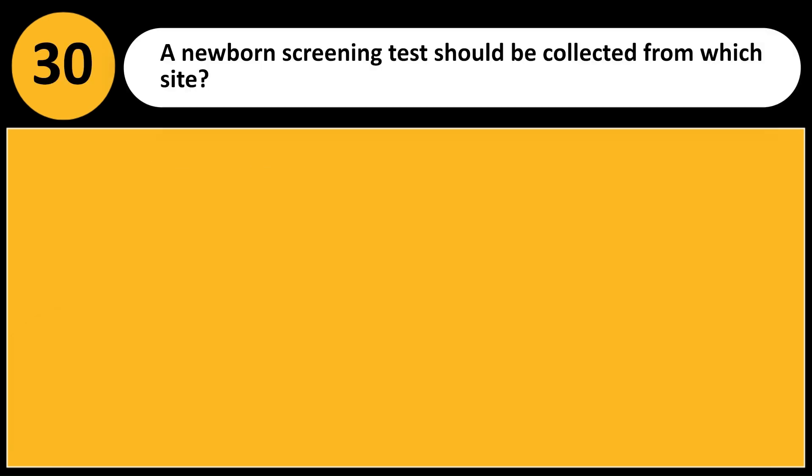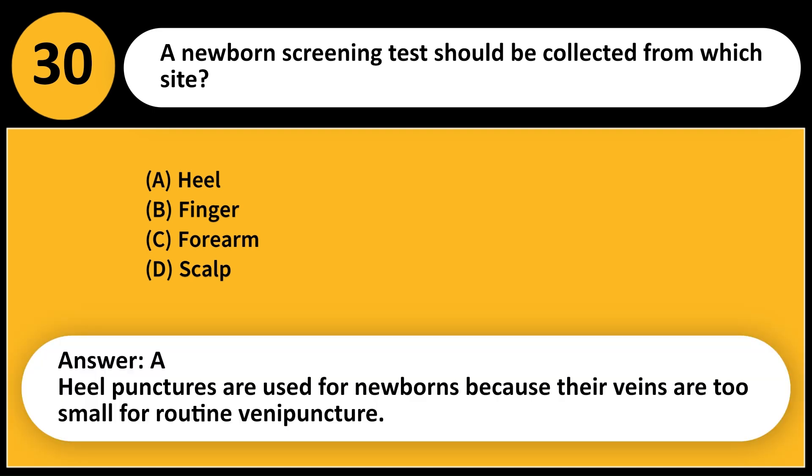A newborn screening test should be collected from which site? A. Heel. B. Finger. C. Forearm. D. Scalp. Answer: A. Heel punctures are used for newborns because their veins are too small for routine venipuncture.